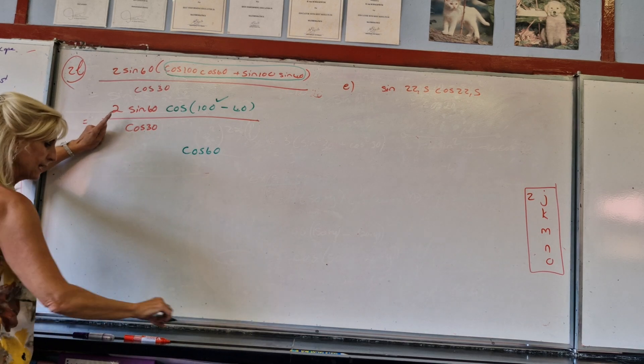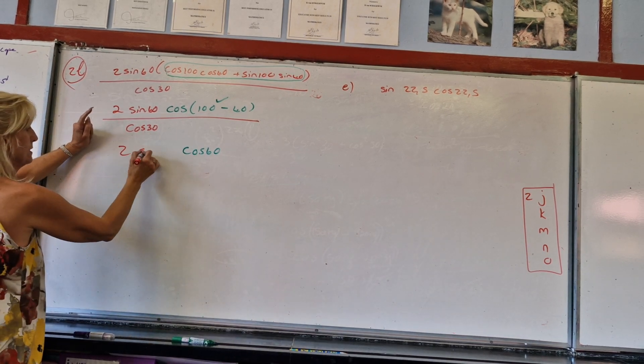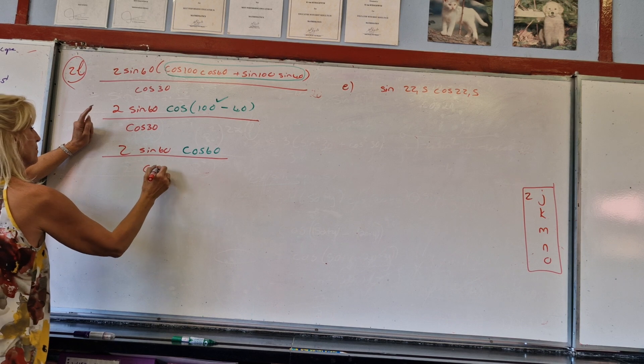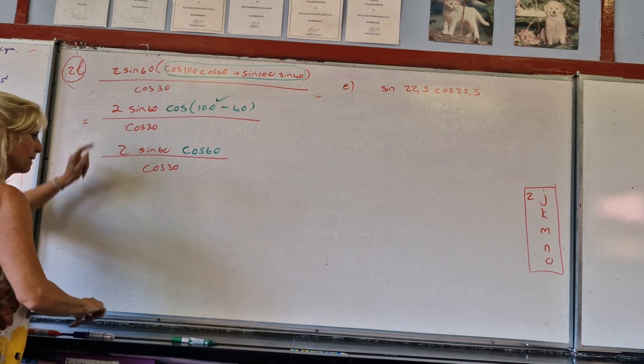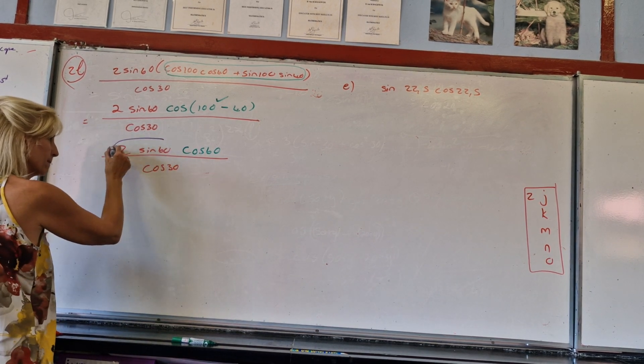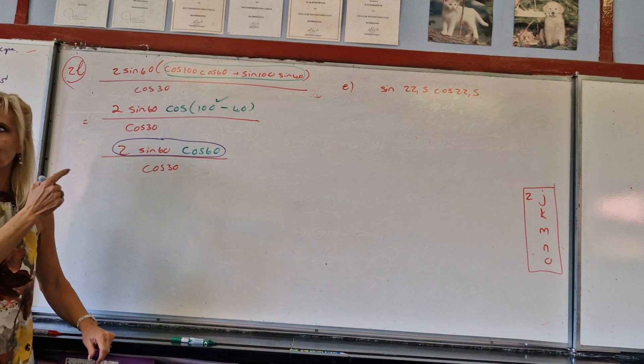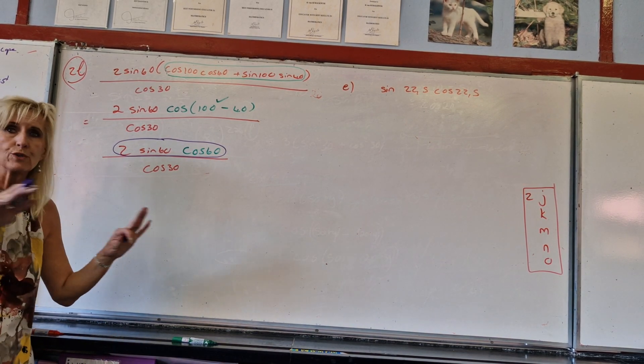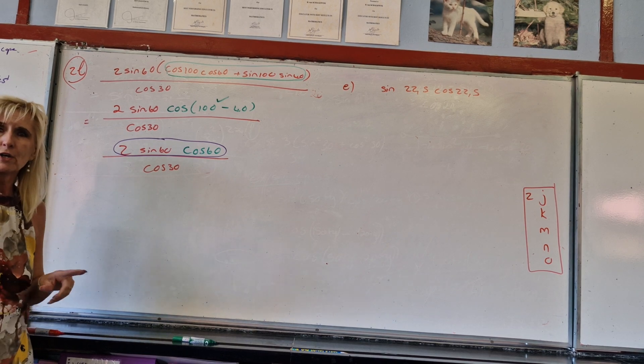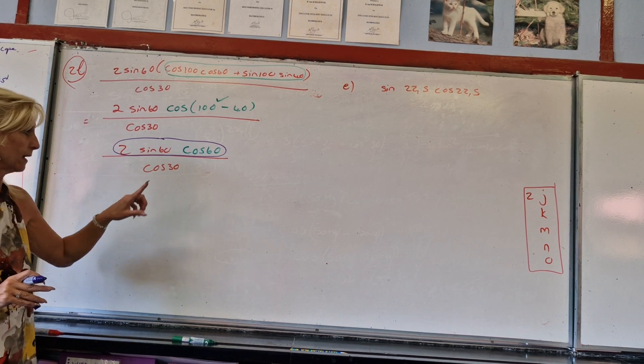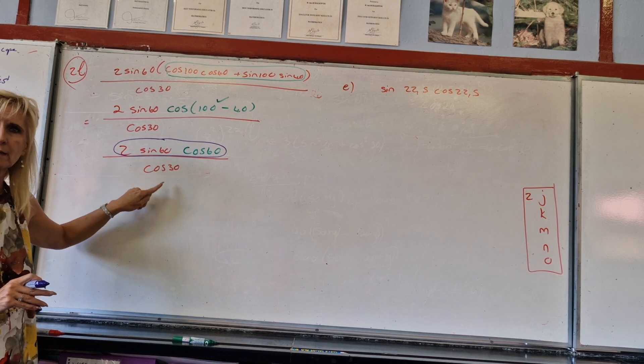If I left it as it was, 2sin 60, what is that at the top then? There is a thing called co-function. What identity is that? That's a sin double angle. Oh, which you didn't have to do.